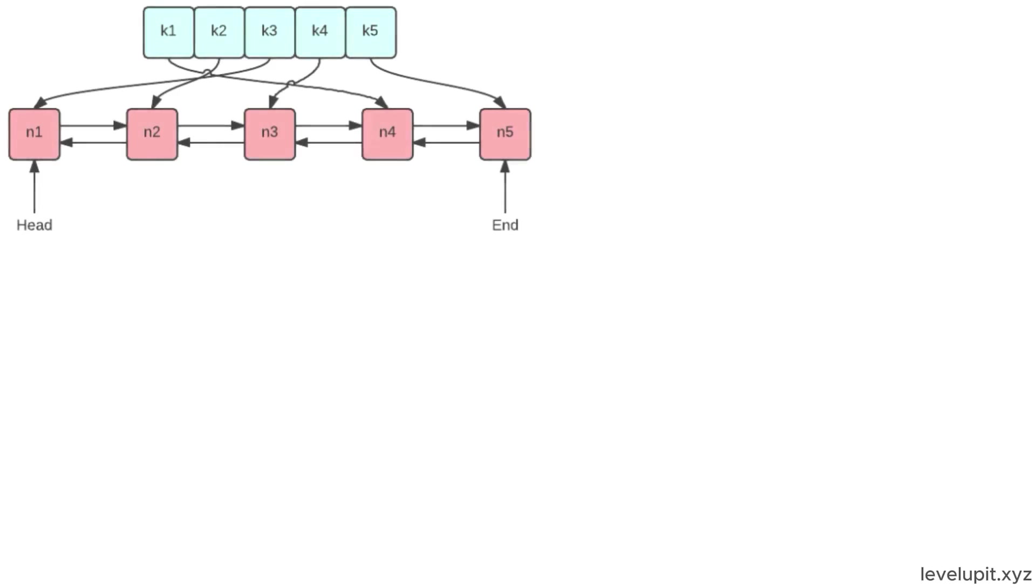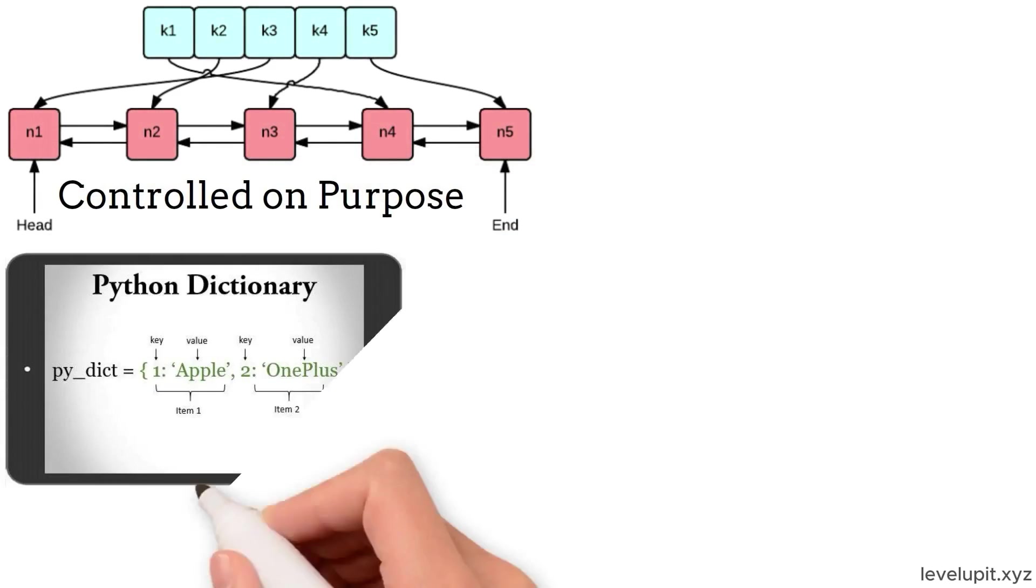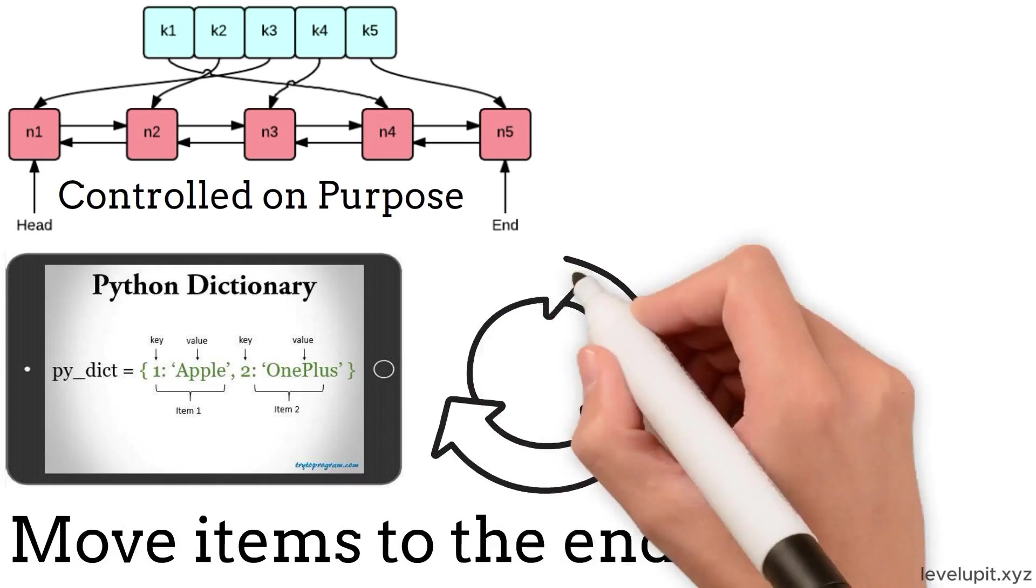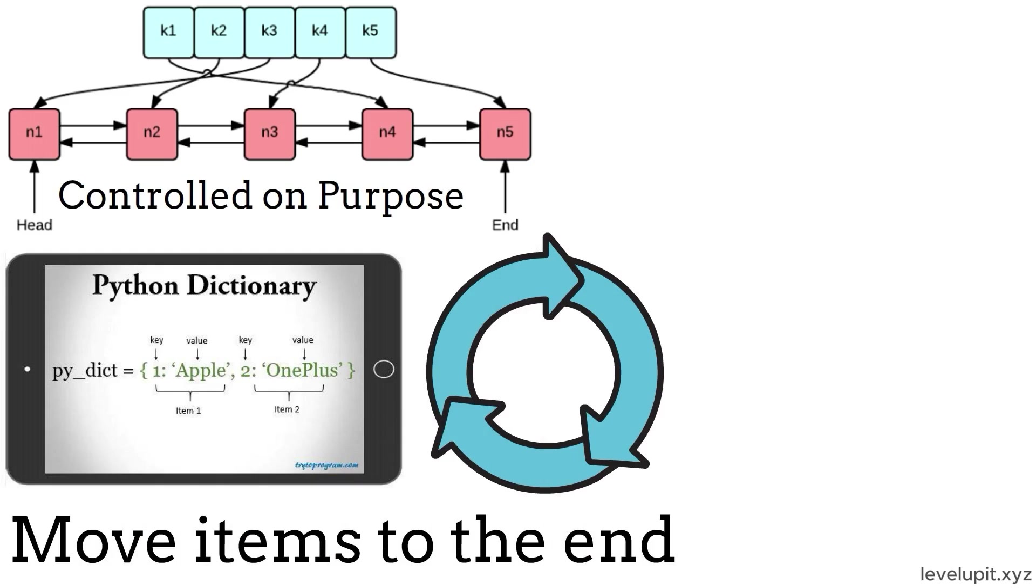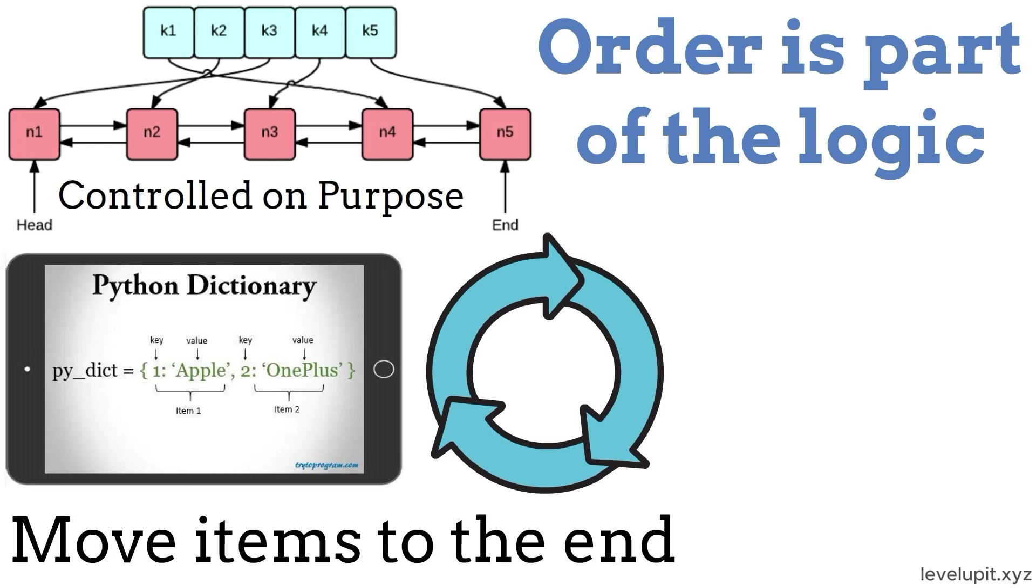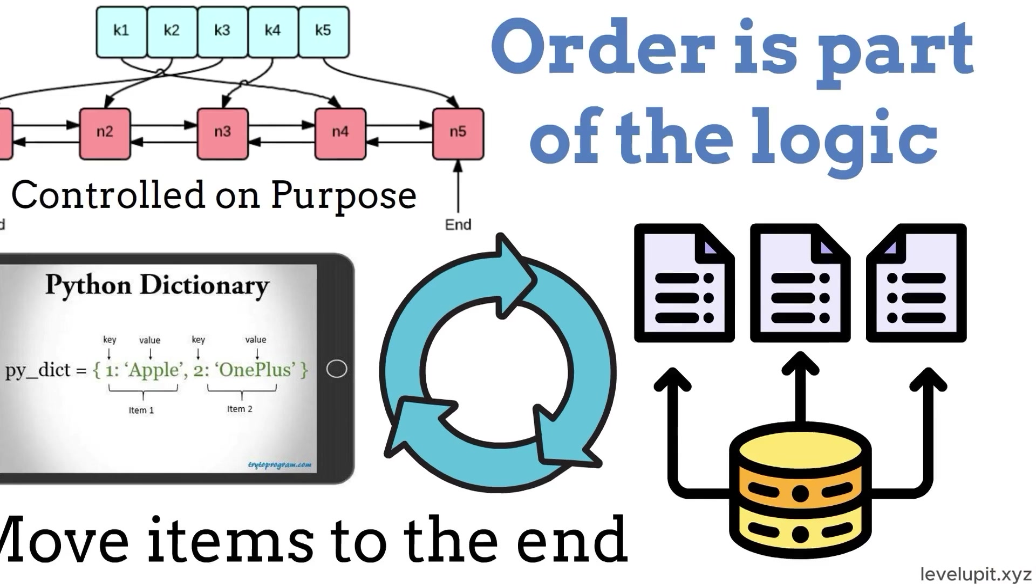OrderedDict matters when order is controlled on purpose. Regular dictionaries keep insertion order now, but an OrderedDict lets you move items to the end, reorder keys intentionally, and show that order is part of the logic, not just a side effect. It's useful for structures like least recently used caches where recency matters.